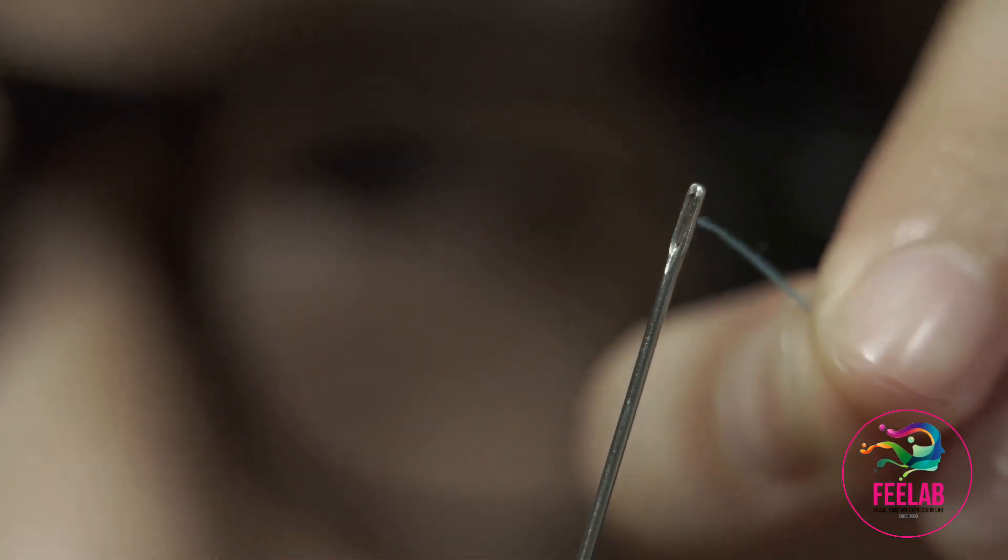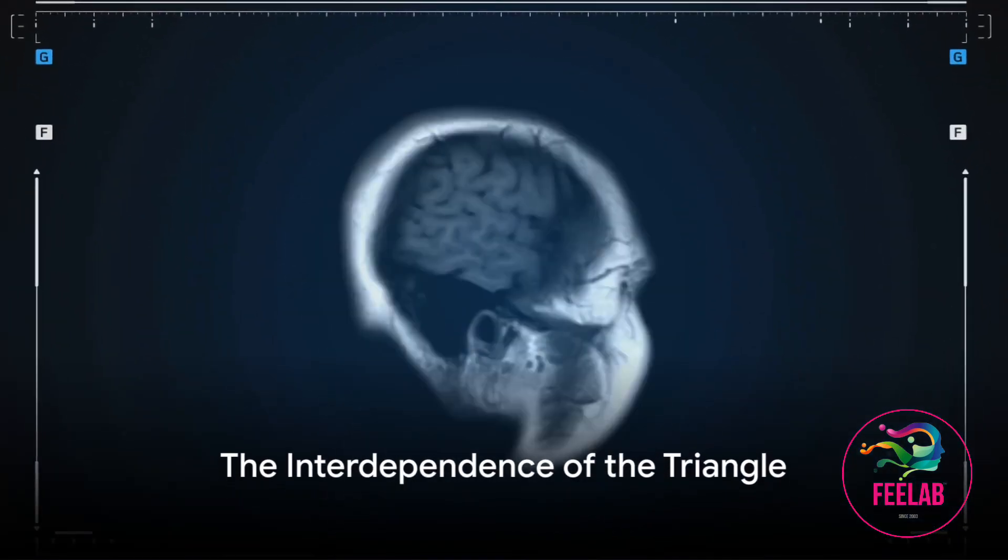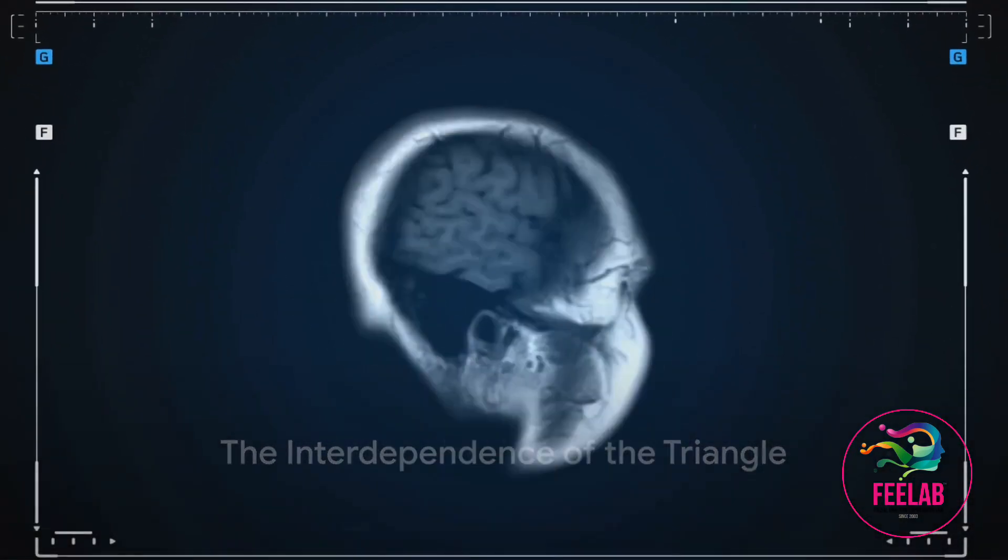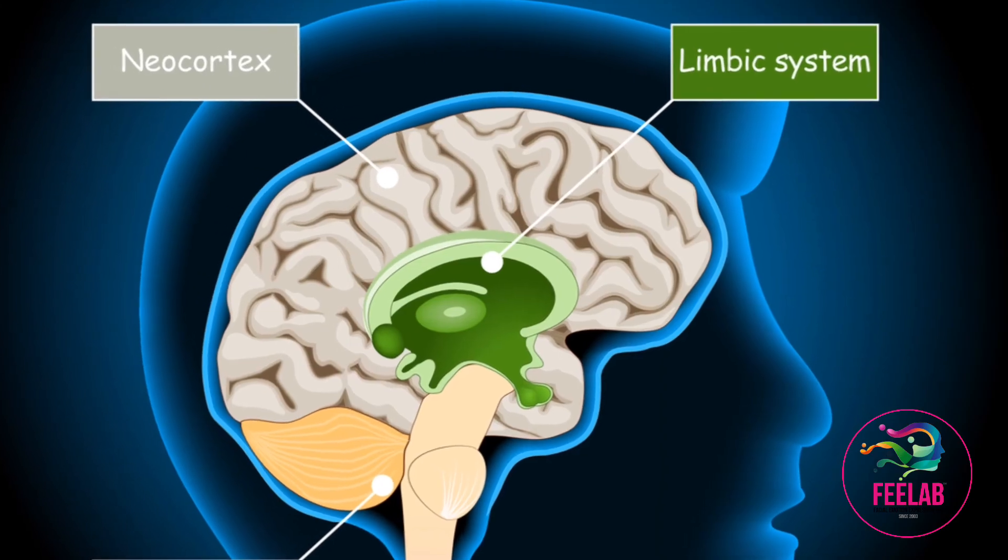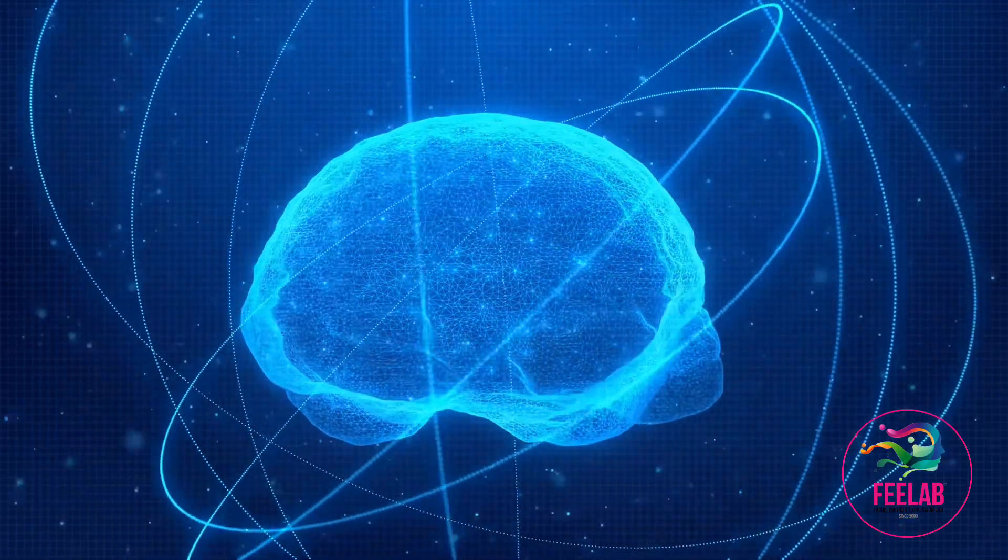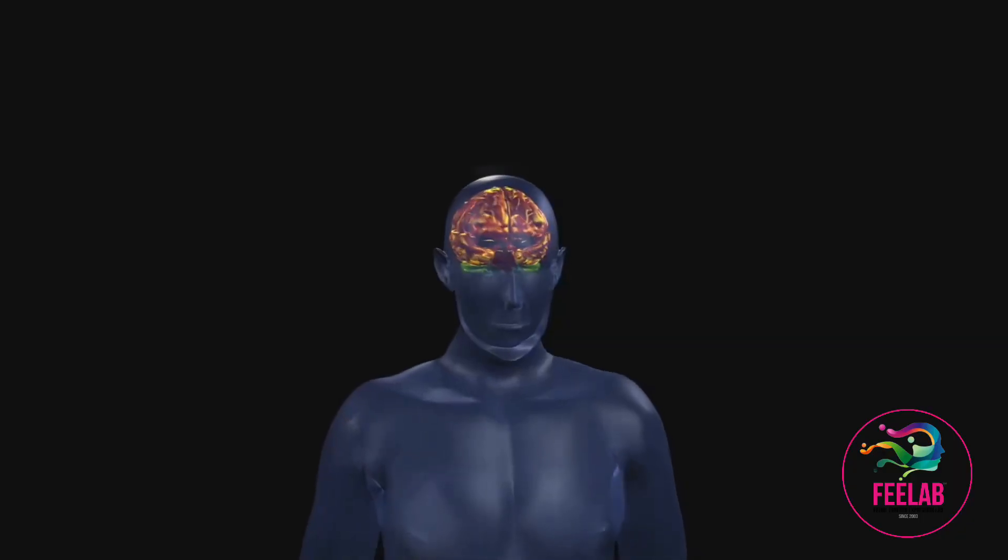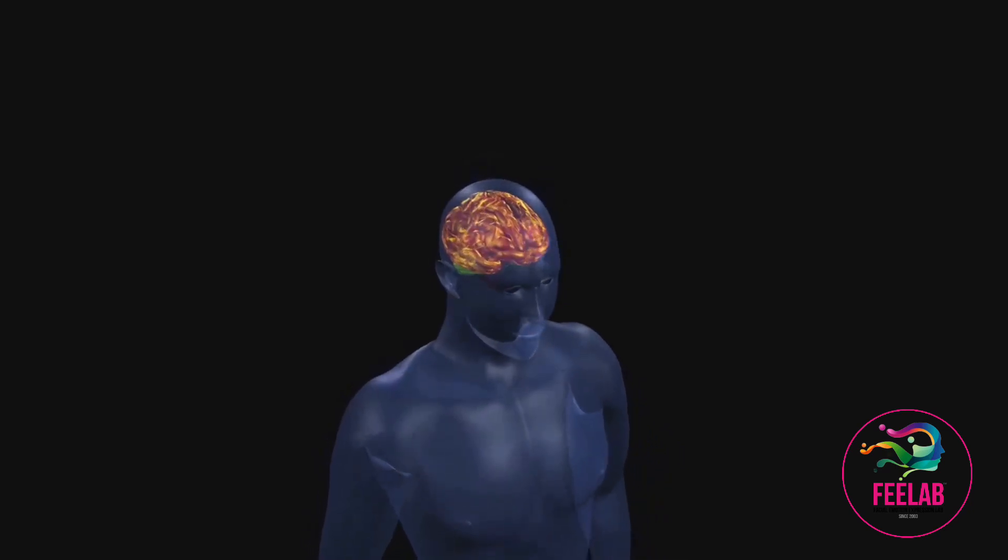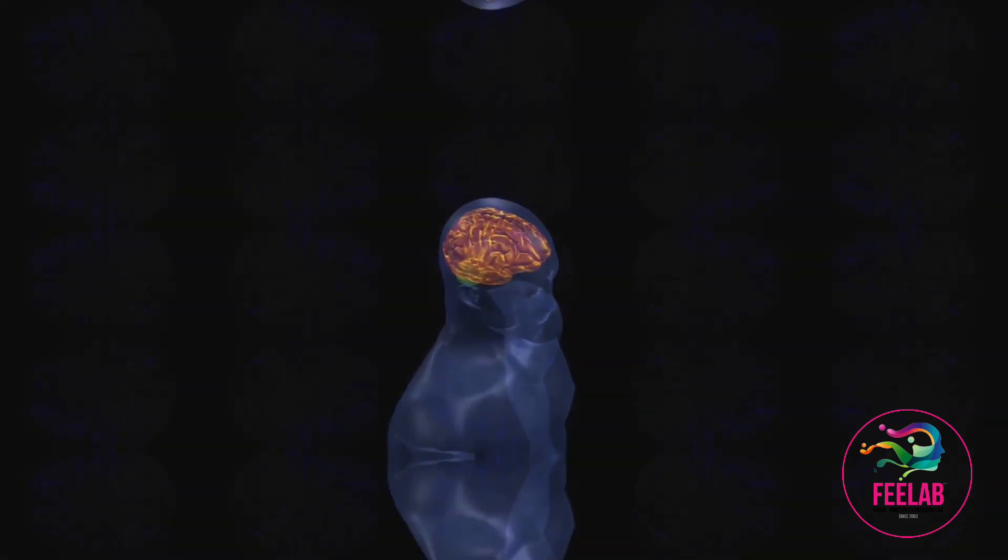The triangle of human survival shows us that these three elements - the brain, face, and emotions - are not just interconnected but interdependent. They form a complex system, a dance of survival that has evolved over millions of years. They are the trinity of our existence, the pillars that support our survival.